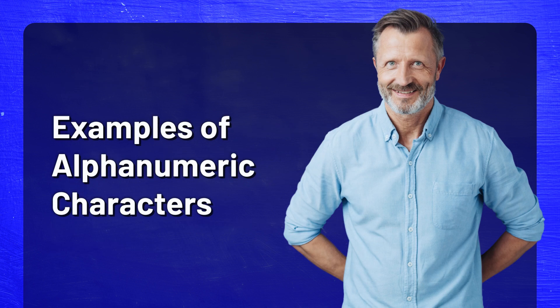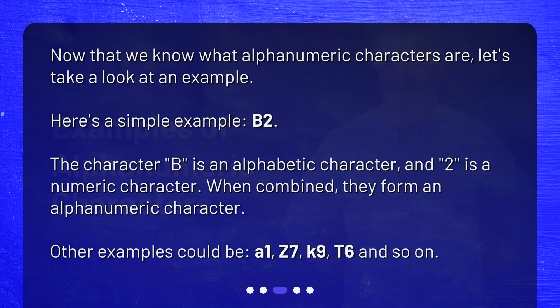Examples of Alphanumeric Characters. Now that we know what Alphanumeric Characters are, let's take a look at an example. Here's a simple example: B2. The character B is an alphabetic character, and 2 is a numeric character. When combined, they form an Alphanumeric character.